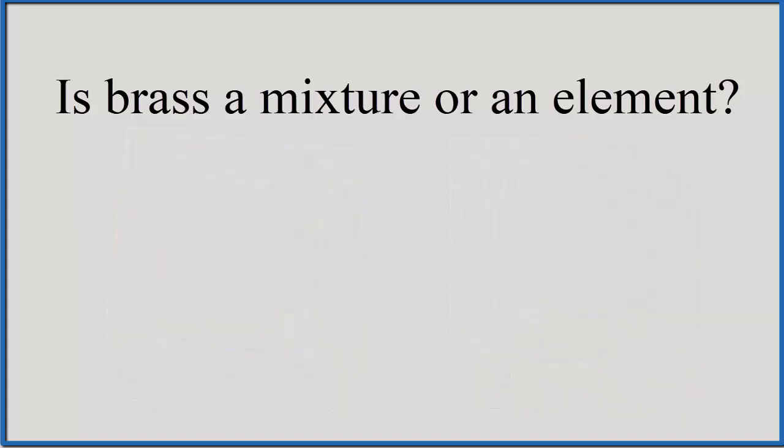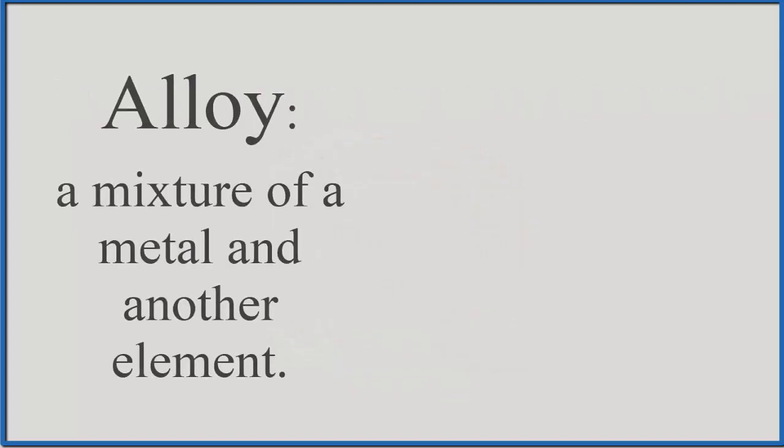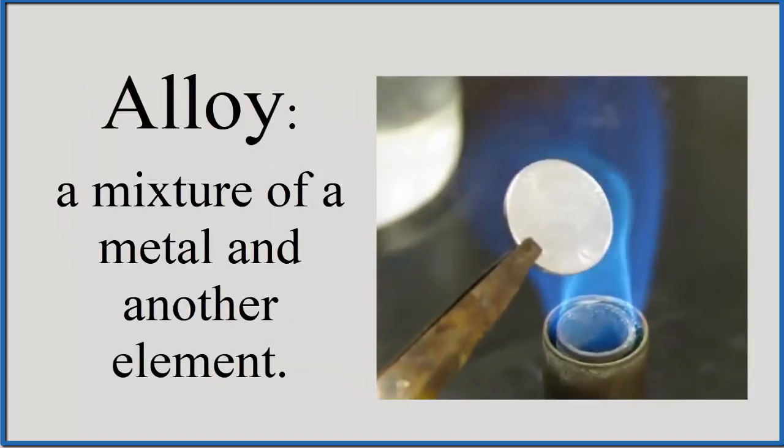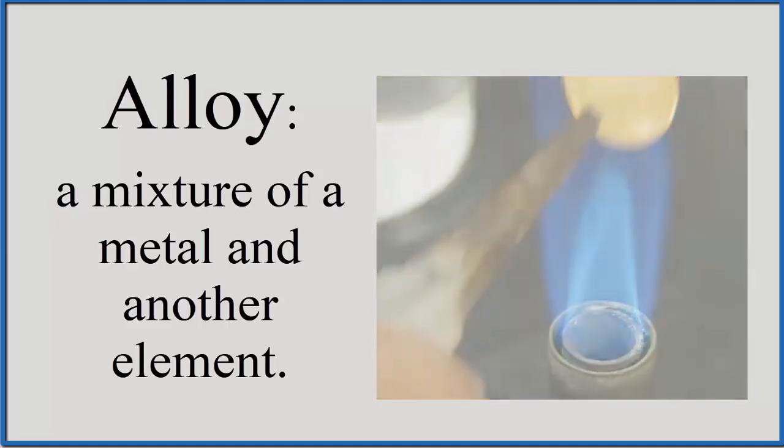When we mix those together, we get brass. Brass is what we call an alloy. It's a mixture of a metal and another element. Often the other element is another metal. That's where we get brass, copper and zinc, both metals.